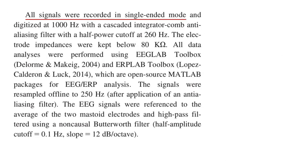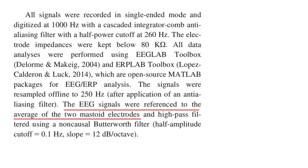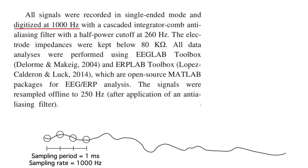These signals were recorded in single-ended mode, which just means that the referencing was done in software offline. Felix used the average of the mastoids as the reference. The signals were digitized at 1000 Hz, which means that there was one sample every millisecond. An anti-aliasing filter was applied in hardware prior to sampling to make sure that the sampling rate was more than twice as high as the highest frequency in the data.